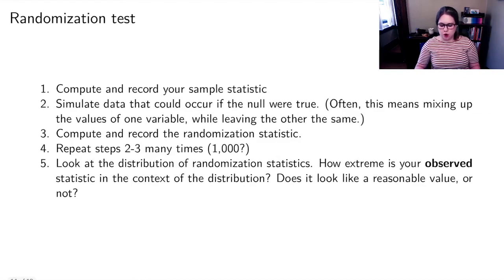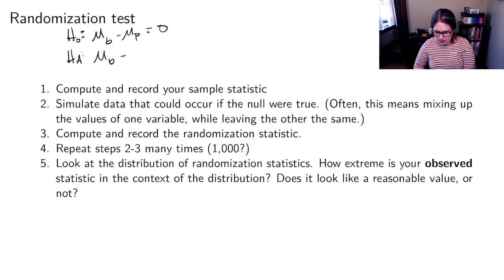A little overview of how a randomization test works. You're always going to start by writing out your hypotheses. You're going to have your null and alternative hypotheses, and you're going to have to think about what you want to test. So in this case, it was mu sub b minus mu sub p equal to zero, and mu sub b minus mu sub p not equal to zero.